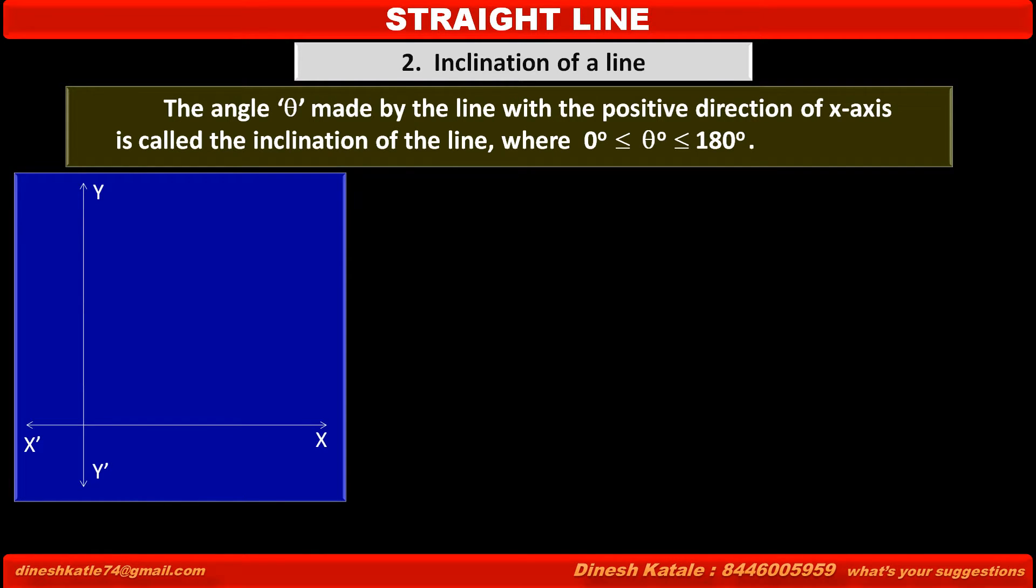Consider a coordinate system. In this system we have to draw line L which makes an angle θ with the positive direction of x-axis. In this case angle θ is an acute angle. Therefore we can write 0° ≤ θ ≤ 90°.